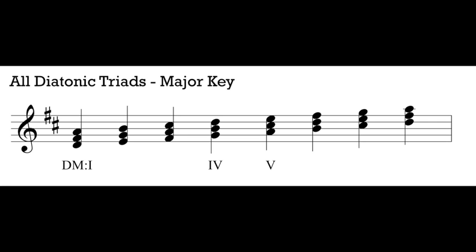There are three diatonic minor triads within the major scale: the supertonic triad built on scale degree two, the mediant triad built on scale degree three, and the submediant triad built on scale degree six. Two, three, and six are all diatonic minor triads. They all contain notes from the D major scale in this case, and all of them have the same interval pattern — a minor third above the root and a perfect fifth above the root — making them minor triads.